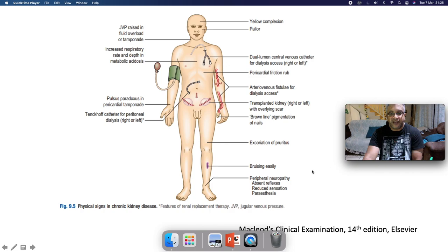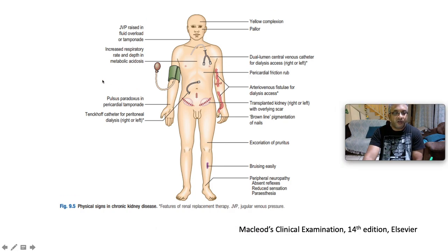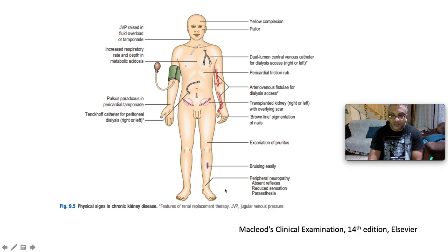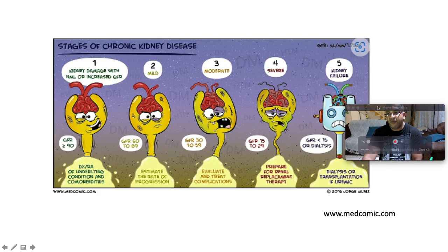This McLeod's diagram shows features of chronic kidney disease: look for any dialysis catheter — Tenckhoff or temporary/permanent vascular catheter — yellow complexion, pallor, raised JVP in fluid volume overload or tamponade from uraemia, increased respiratory rate and depth in metabolic acidosis (Kussmaul's respiration), pericardial friction rub, transplanted kidney with overlying scar, Terry's nails, excoriation, easy bruising, and peripheral neuropathy with absent reflexes, diminished sensation, and paraesthesia.